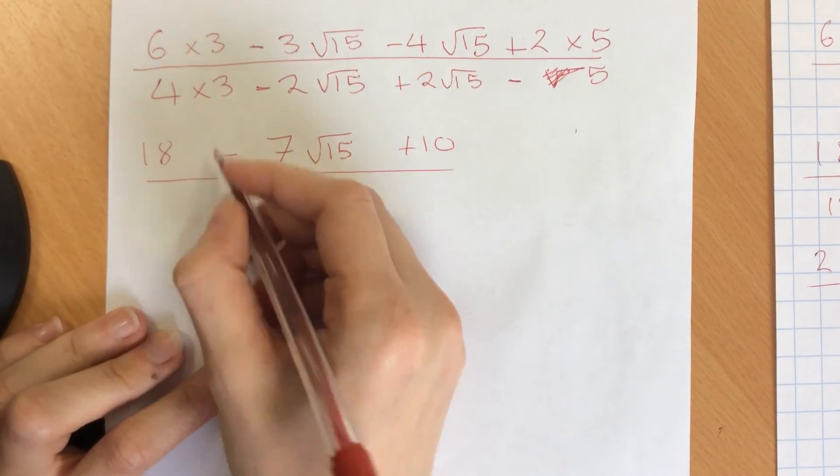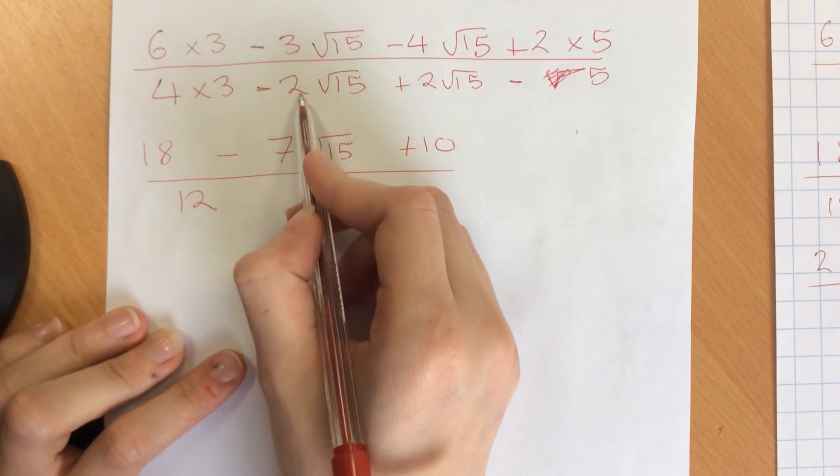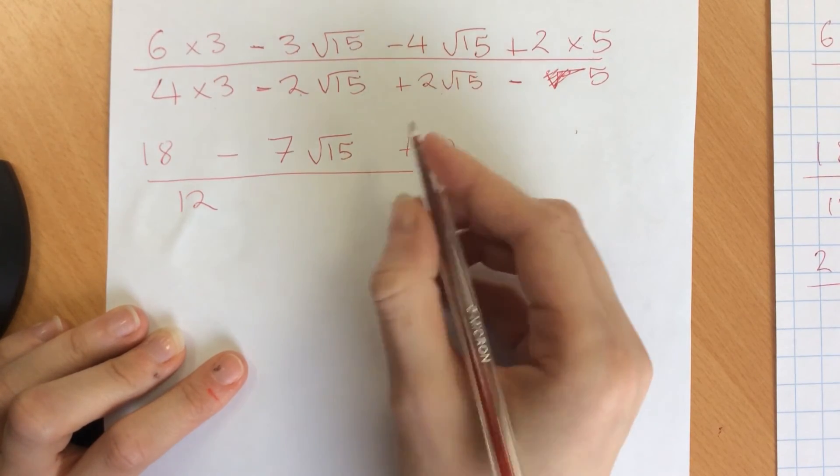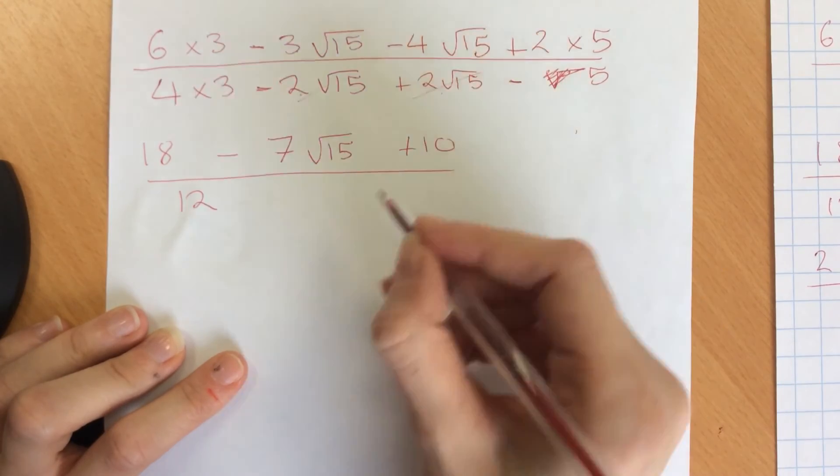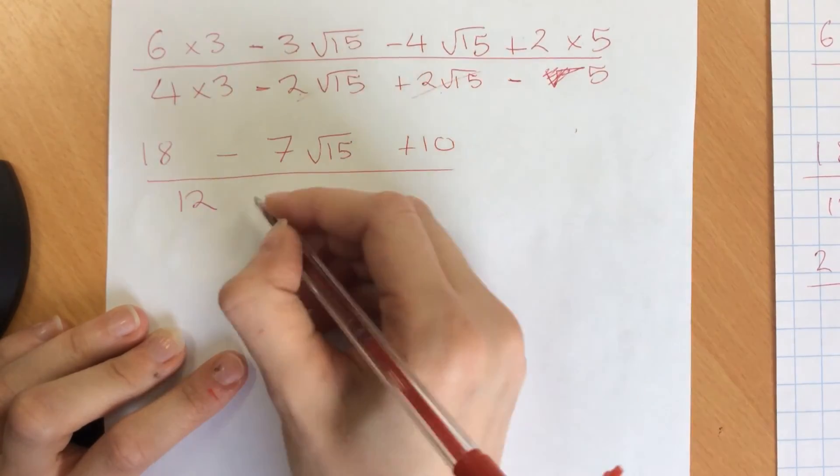All over, working this out, we've got 4 times 3 is 12. Minus 2 root 15 plus 2 root 15, cancelled out. Then we've got minus 5 on the end.